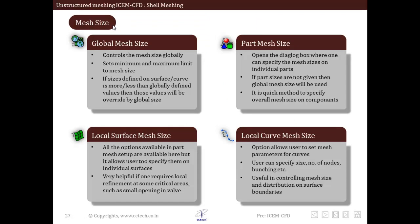In this slide we will see the options to control the mesh size. There are various options at four different geometry levels: global level, part mesh level, local surface mesh level, and local curve mesh level. The global mesh size controls mesh size globally — it sets the minimum and maximum limit for mesh size throughout the entire domain, defining the highest and lowest mesh sizes allowed.